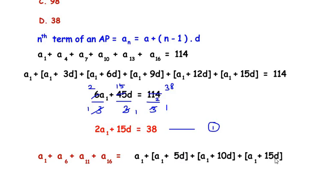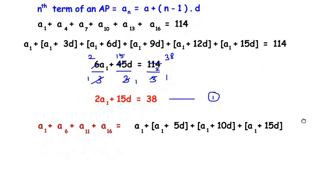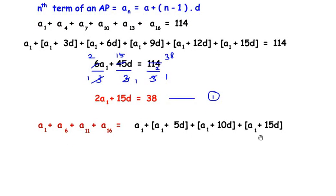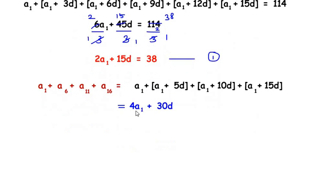Now again let us combine the like terms. We have 4 a1s here, so 4a1 plus 5d plus 10d plus 15d gives us 30d. Now we can factorize these two terms. We can see that 2 is a common term, so we can write 2 times 2a1 plus 15d.